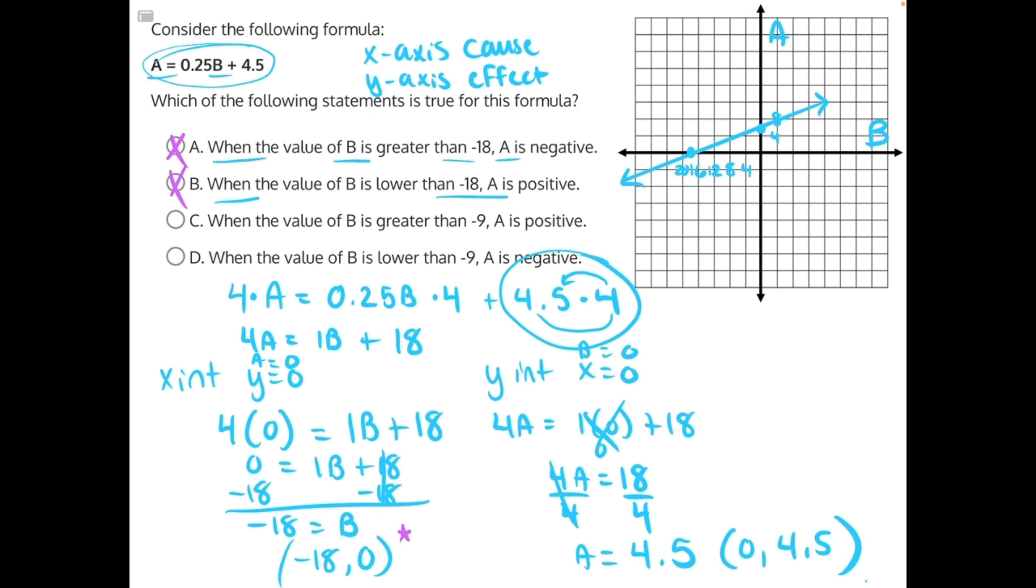C says when the value of B is greater than negative 9, it should be about here. Greater than negative 9, A is positive. If we look greater than this, all of these values are positive. They're all above the x-axis, and they will continue to extend into positive infinity. So this is a true statement, making C our correct answer.